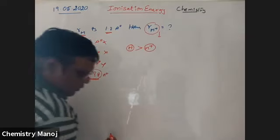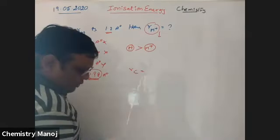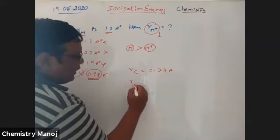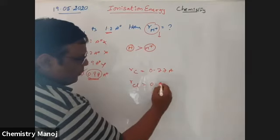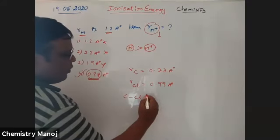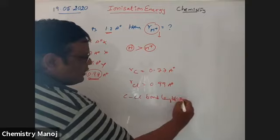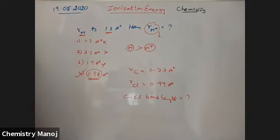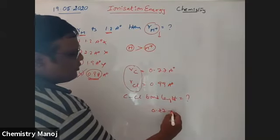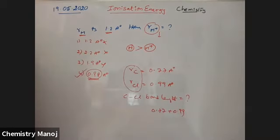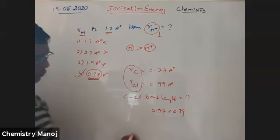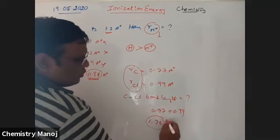Another example: the radius of carbon is 0.77 Å and the radius of chlorine is 0.99 Å. The C-Cl bond length equals the sum of the two radii: 0.77 + 0.99 = 1.76 Å.